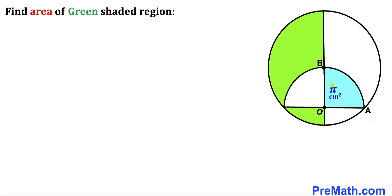Welcome to PreMath. In this video we have a semicircle with center O fully inscribed in a big circle with center B, as you can see in the diagram, such that the area of the blue quarter circle is π centimeter square. Our task is to calculate the area of the green shaded region — both parts combined.